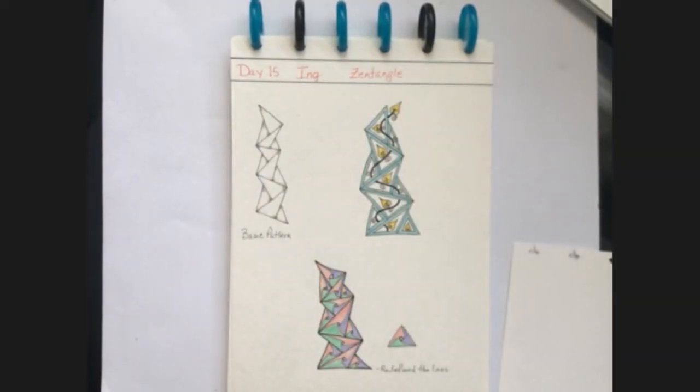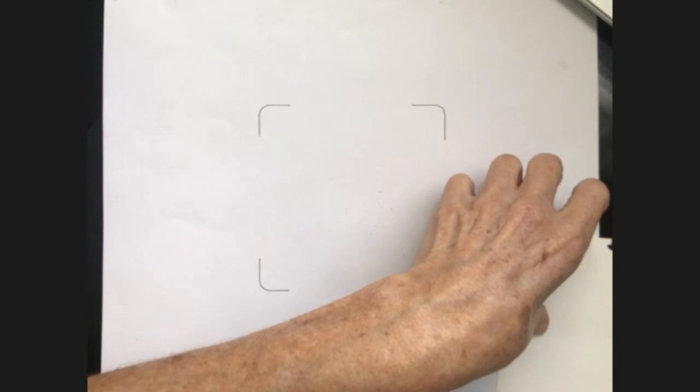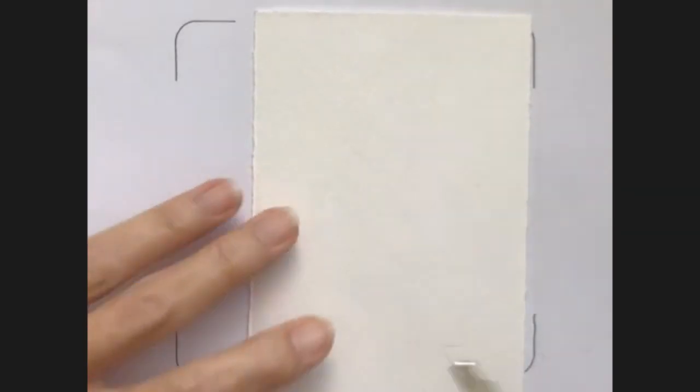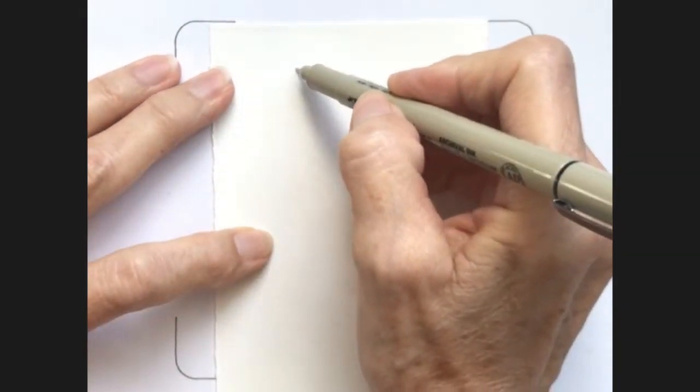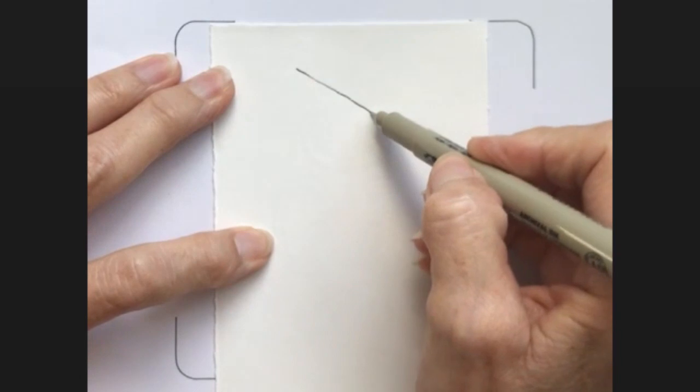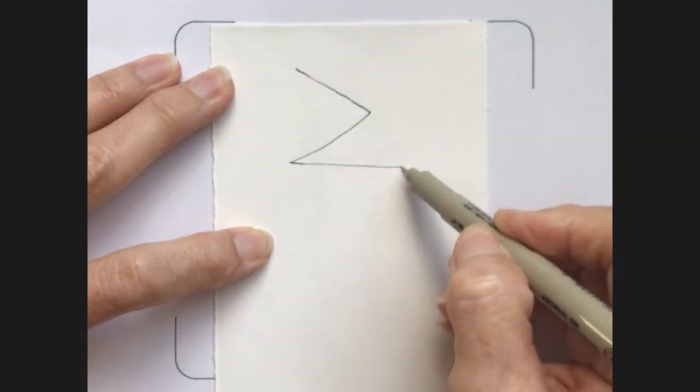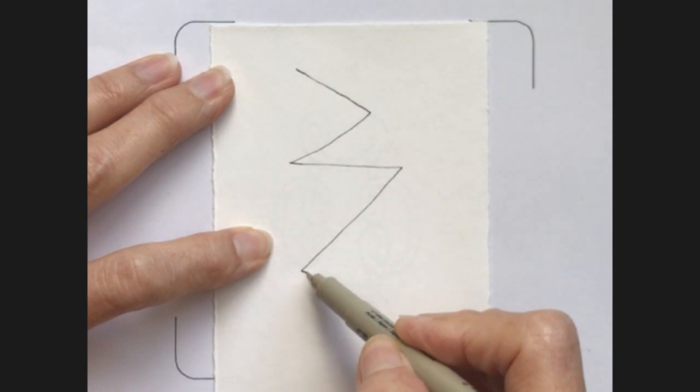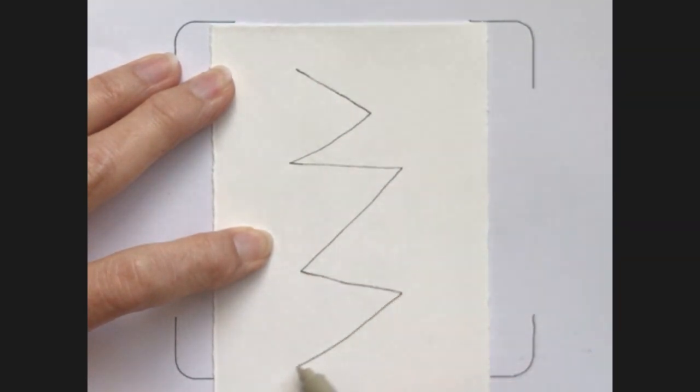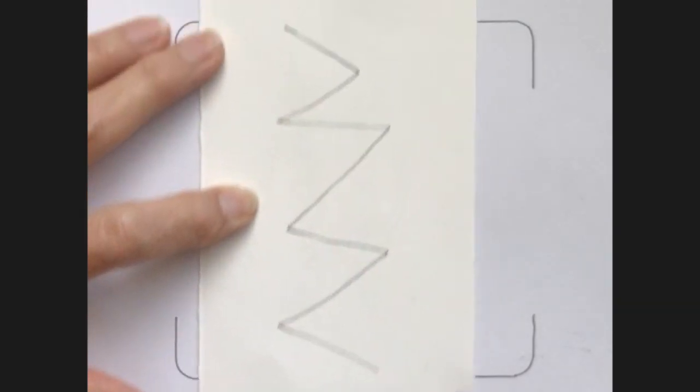So I'm going to show you how to do the basic pattern. The basic pattern just starts with a zigzag line. I'm going to do this kind of big so you can see it. They don't have to be perfect. They don't have to be the same size. You're just going to go back and forth until you get to wherever you want to stop.